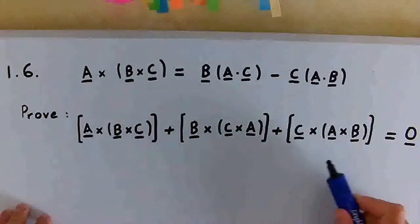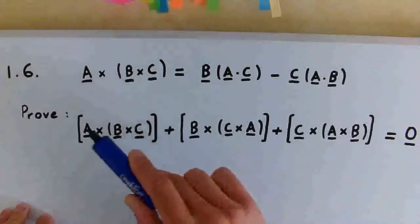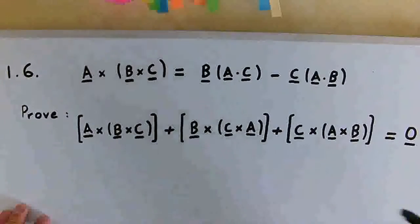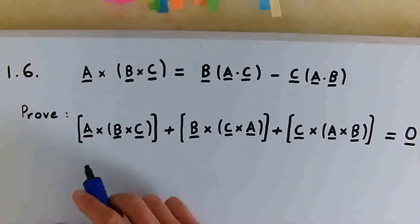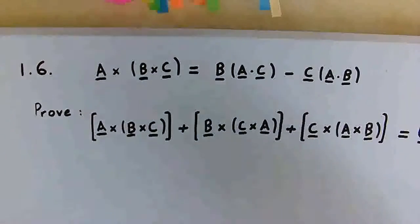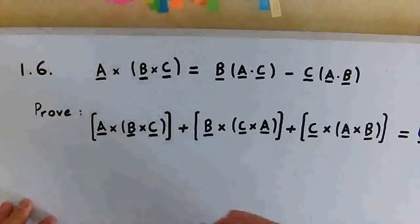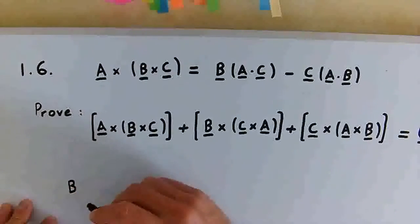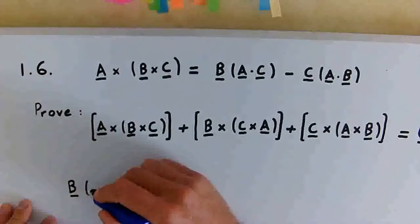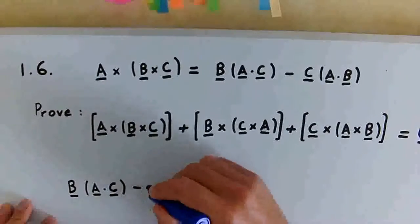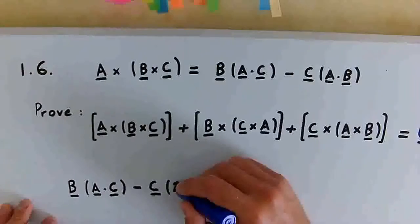In order to prove that this expression in fact equals the zero vector, we need to use the so-called BAC minus CAB rule that we proved was true in the previous video. This first term here we can explicitly write out using the BAC minus CAB rule. We can write A cross (B cross C) as B times (A dot C) minus C times (A dot B).